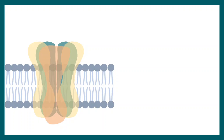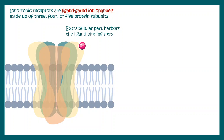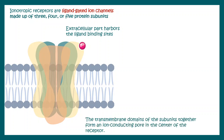Generally, ionotropic receptors are ligand-gated ion channels where the ion channel is made up of 3, 4, or 5 subunits. These subunits are generally diverse — they could be heteromeric or homomeric. It has a ligand binding pocket where the ligand binds. Upon binding to the ligand, there could be a conformational change, and the transmembrane domain has the selectivity filter or selectivity pocket for the ions.